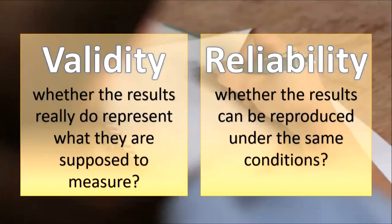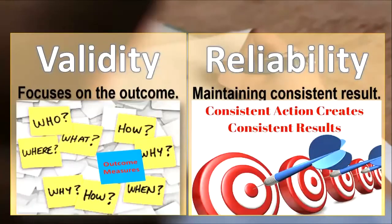Let us take a look at the difference between validity and reliability. Validity concerns whether the results really do represent what they are supposed to measure, while reliability concerns whether the results can be reproduced under the same conditions. In validity, the focus is on the outcome — who, what, where, how, why, and what happened. These are the outcome measures. In reliability, the focus is on maintaining consistent results through consistent action.